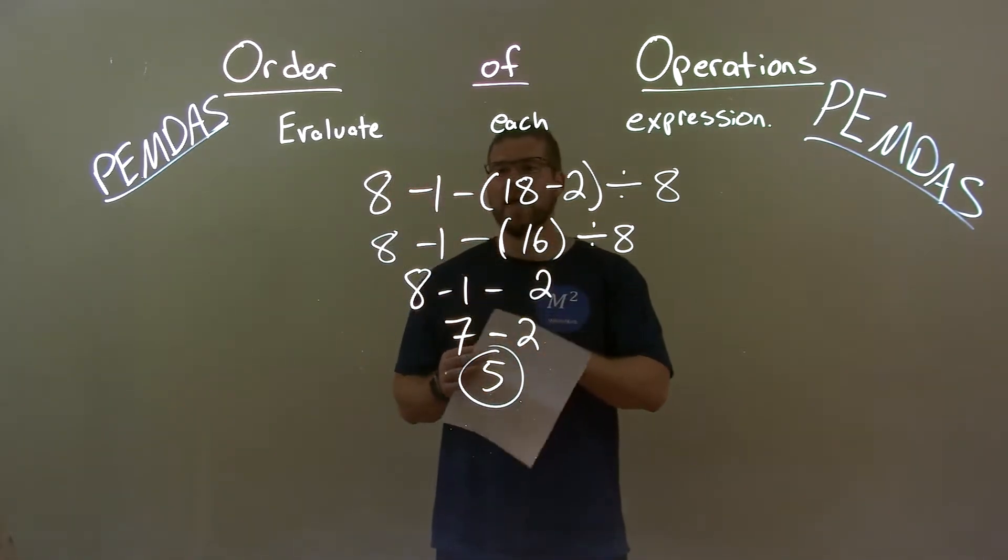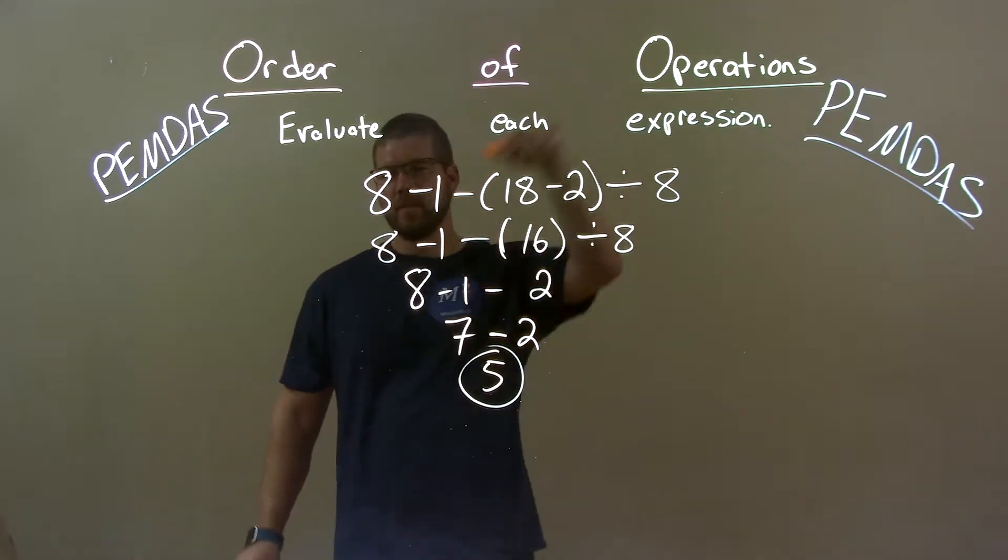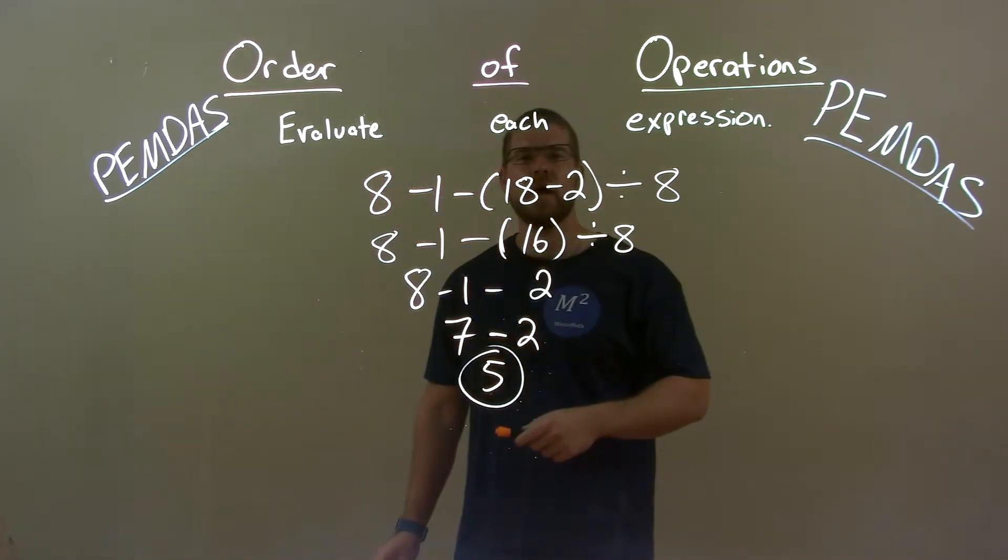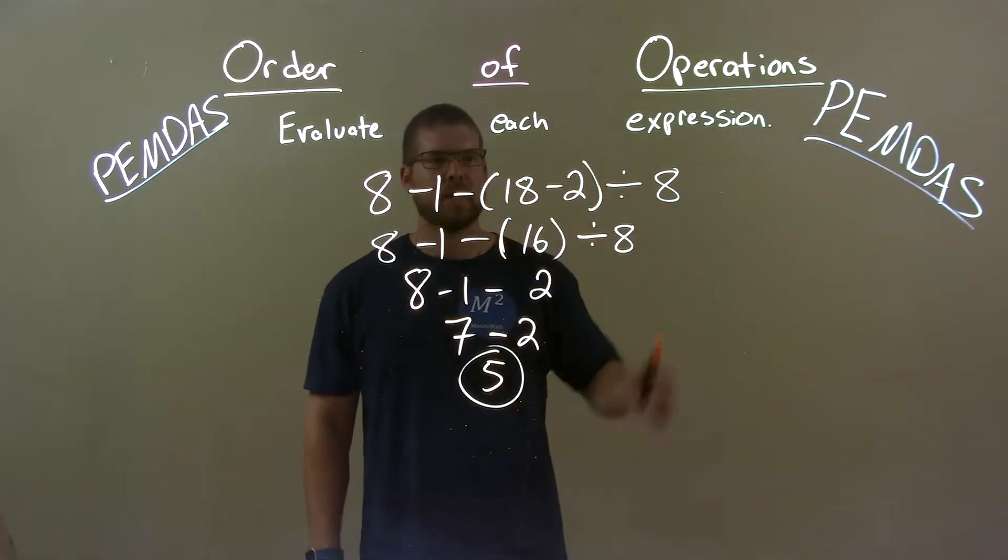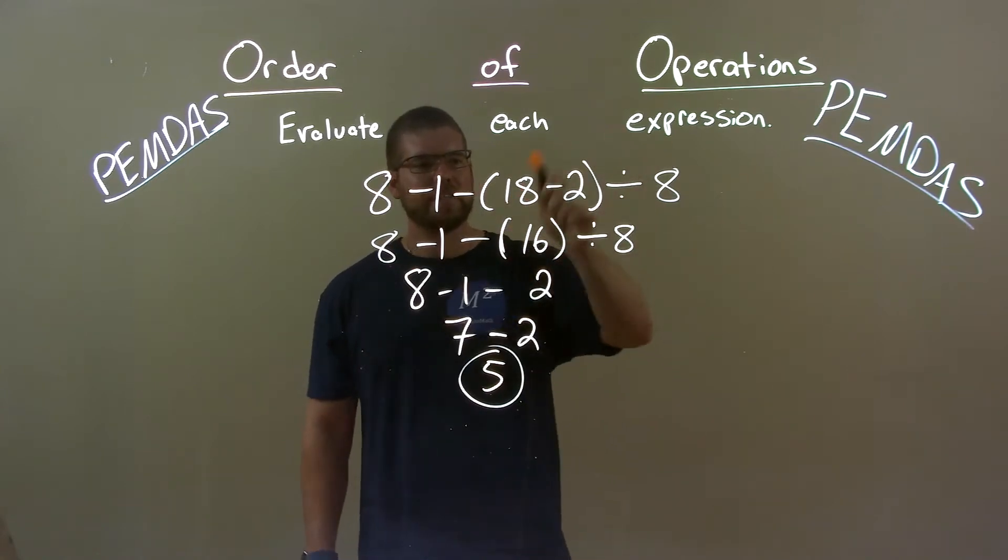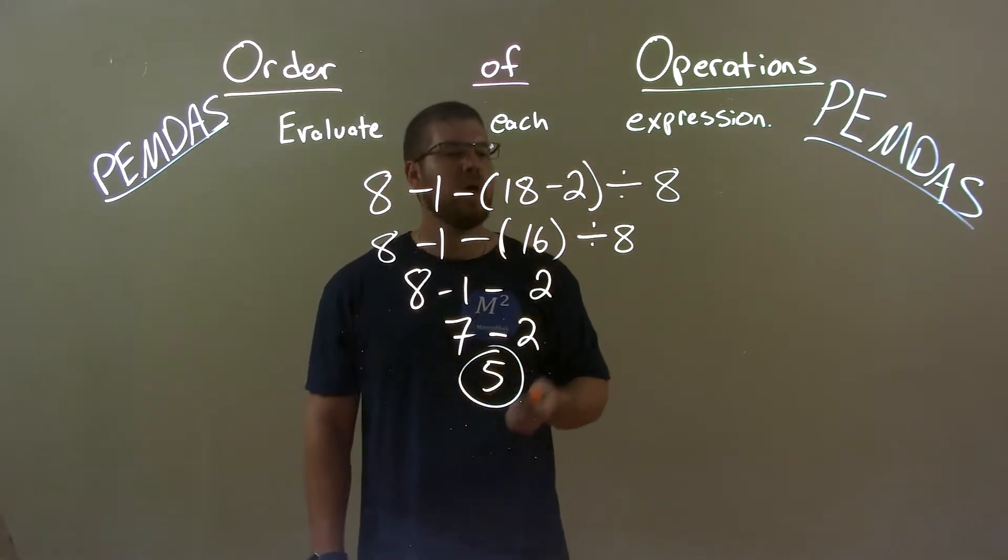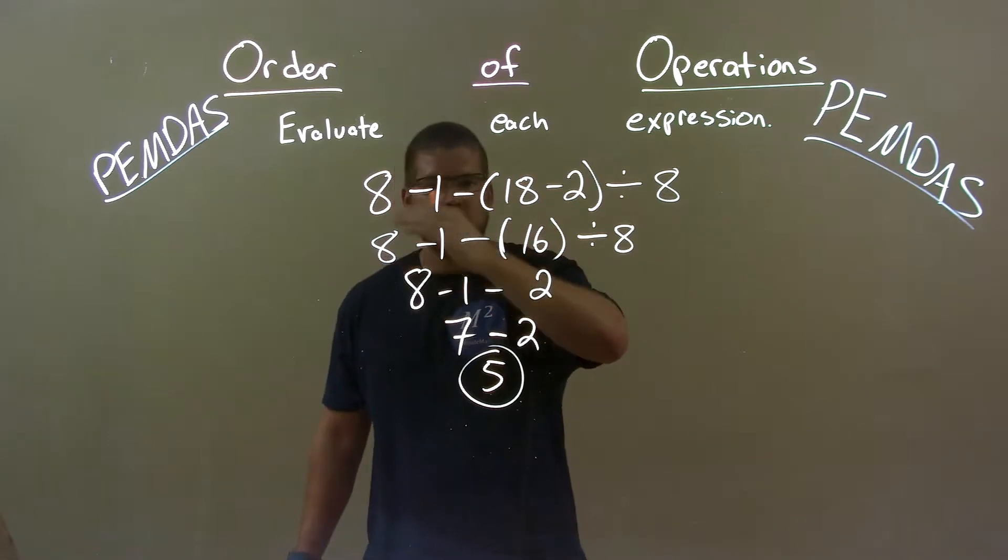Quick recap. We're given 8 minus 2 minus, in parentheses, 18 minus 2, then divided by 8. Deal with the parentheses first. 18 minus 2, 16. Now bring down everything else.